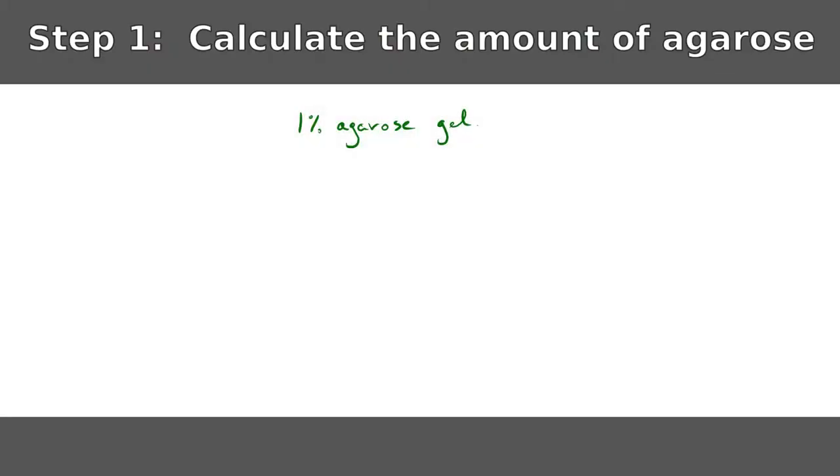In general, agarose gels come in a range of percentages, depending on what it is you're trying to accomplish. For example, if you're trying to separate large DNA fragments, you would make a low-percentage gel, like a 0.7% or 0.8% gel. And if you are trying to separate some small fragments, then you want to make a denser gel, and so you would make something like a 2% agarose gel.